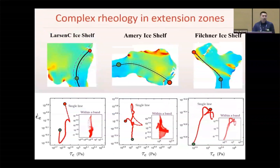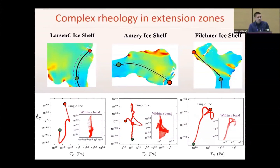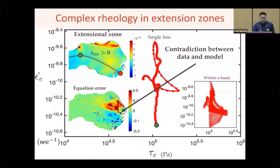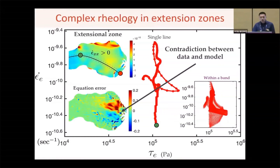Now let's look at the extension zone. Compared to compression zones, the rheological behavior in the extension zone on different ice shelves seems more complicated and less consistent. A key finding is that the inference error in the extension zone is always larger than that in the compression zone. We have verified that such error is not due to the data or the method, but is actually due to contradiction between the model and the data.